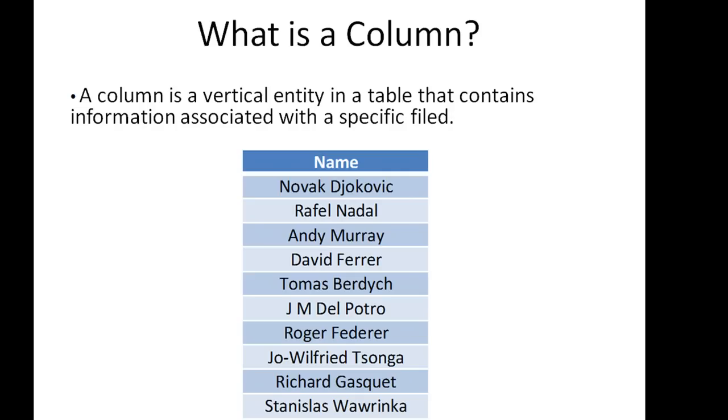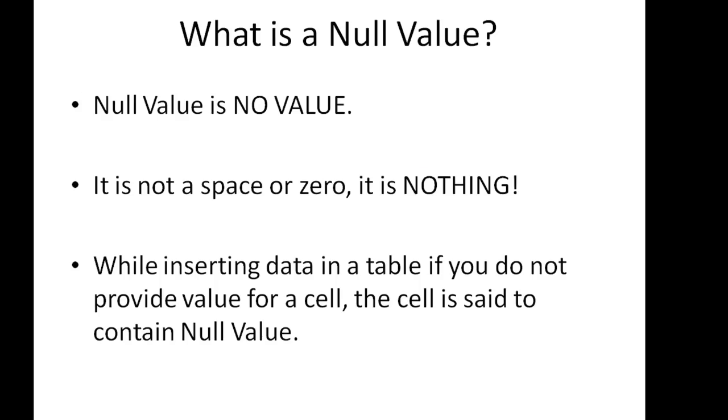Next we are going to talk about null value. What is a null value? You would hear a lot of people say that null value is zero or null value is the space character, but that's not true. Null value simply means nothing—it is no value. If you are inserting data in a table and if you do not provide value for a cell, the cell is set to contain null value. If you're populating a table in a database and for a particular cell or a particular column in a row you do not want to provide any input, you don't put in anything. You don't put in a space character, you don't put in zero, or any alphabet or any special character—you just don't put anything. That absence of information, that absence of data, is actually null value. It's unknown, so that's why we call it null value.